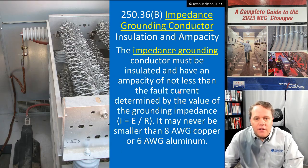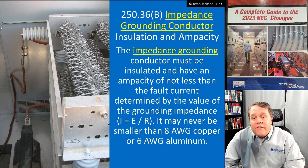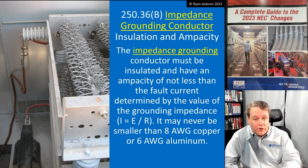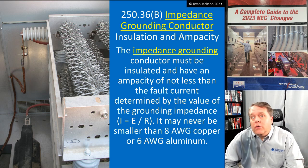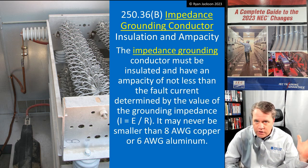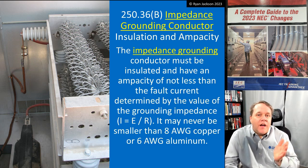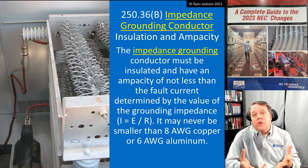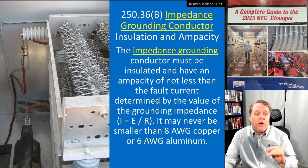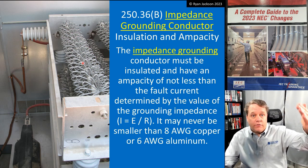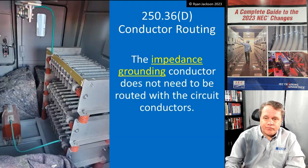The impedance grounding conductor must have an ampacity of not less than the fault current, which is determined by the value of the grounding impedance using I = E/R. It must never be smaller than 8 AWG copper or 6 AWG aluminum. Just like service conductors and grounded conductors, we have a minimum here - it can't be 14 AWG. We size it based on the amount of fault current it's expected to see: line-to-ground voltage divided by the resistance of the toaster gives us the ground fault current.